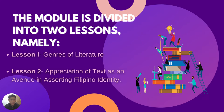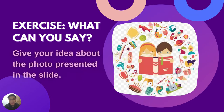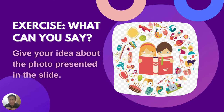This module is divided into two lessons: lesson one, which is the genres of literature, and lesson two, which is the appreciation of text as an avenue in asserting Filipino identity. Let's go now to our motivation or exercise for today. The main objective is for you to give your idea about the photo presented in the slide. Just be yourself — answer confidently, because all things you are thinking are acceptable.